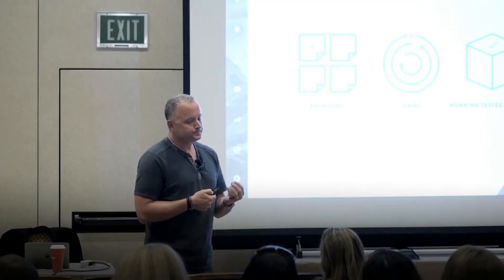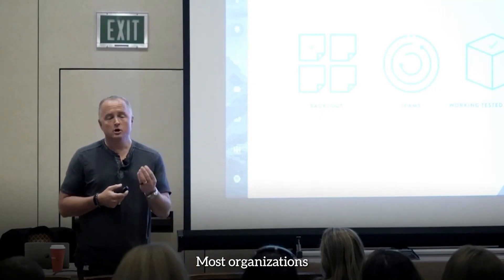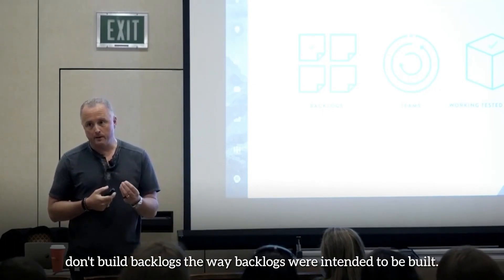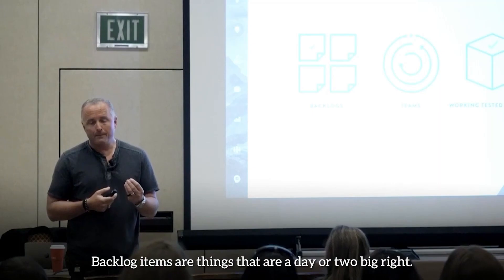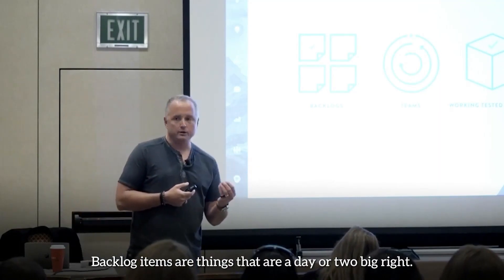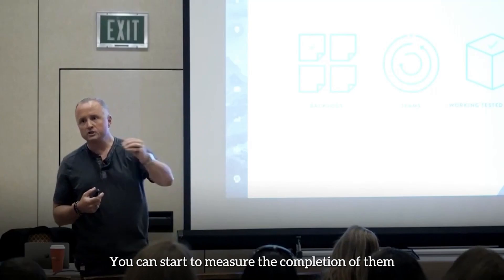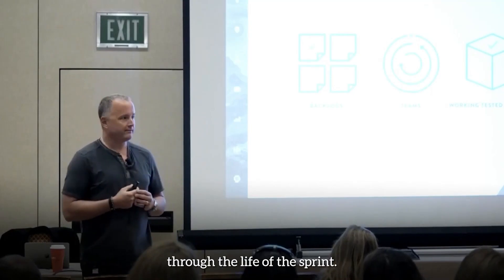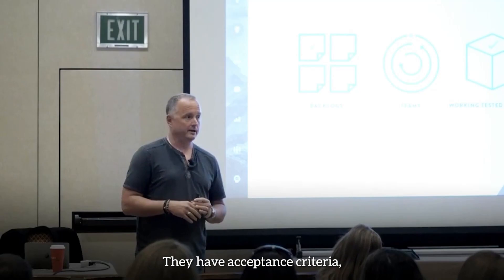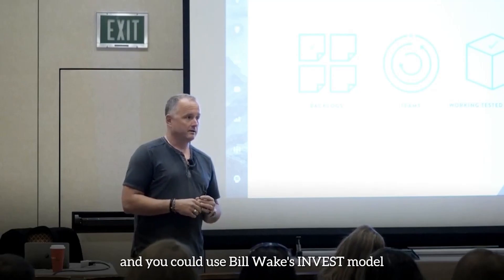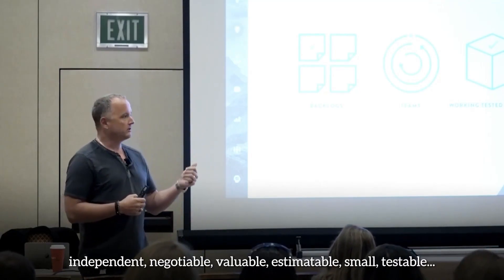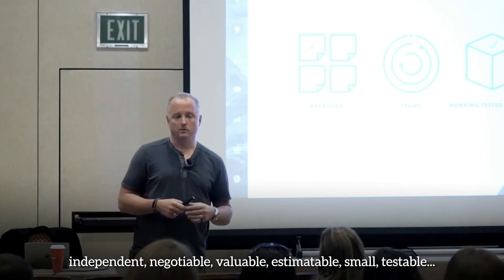Backlogs is the next piece. Most organizations don't build backlogs the way backlogs were intended to be built. Backlog items are things that are a day or two big — you can measure their completion through the life of the sprint. They're very specific and have acceptance criteria. You could use Bill Wake's INVEST model: Independent, Negotiable, Valuable, Estimatable, Small, Testable.